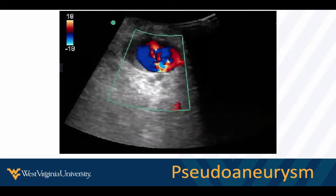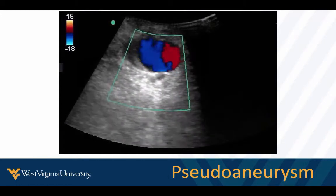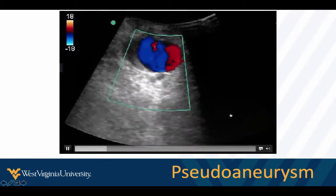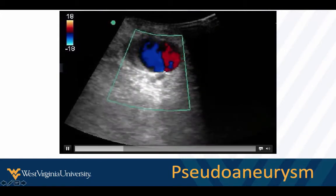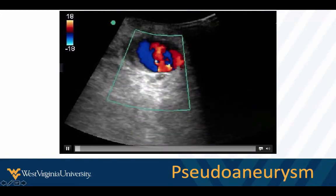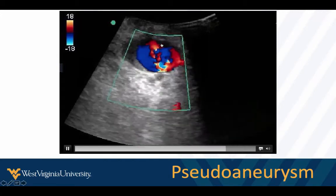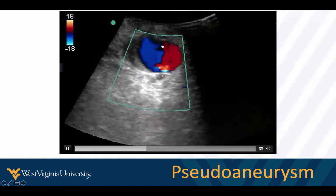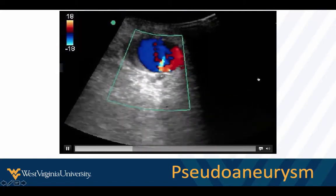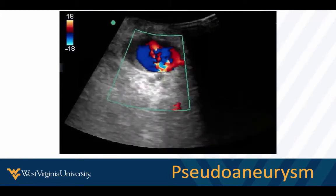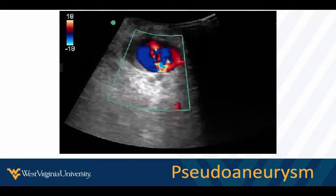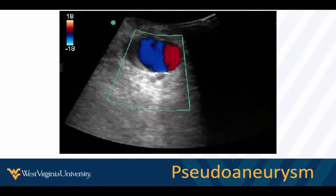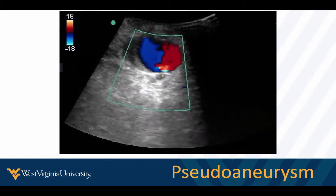Pseudoaneurysm — this is a femoral artery, and we can see the origin and the classic yin-yang where flow comes in and then goes back out through a little neck. I often call it the 'hematoma that has blood flow in it,' and that's what a pseudoaneurysm looks like. Back before angiosteal closure devices, we would see these daily. We don't even need Doppler for this — we find the area that looks like a hematoma, put color on it, and see blood flow swirling in and out. Diagnosis in a couple of seconds.